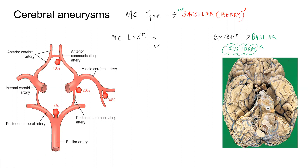The next question is: what is the most common location? Remember, around 90% of cases happen in the anterior circulation. The circle of Willis has an anterior circulation and a posterior circulation, and 90% of cases happen in the anterior circulation.